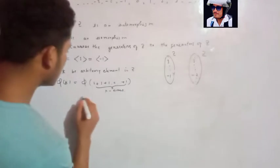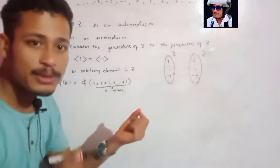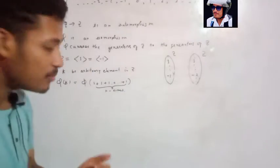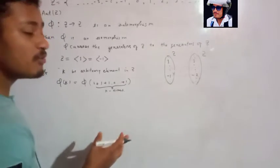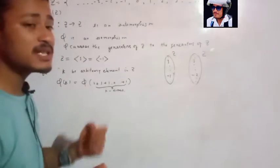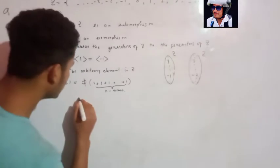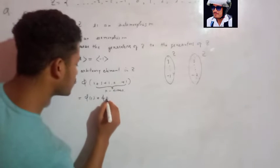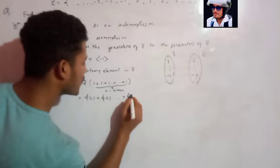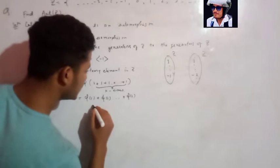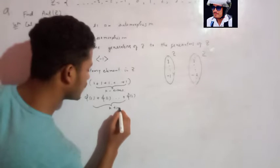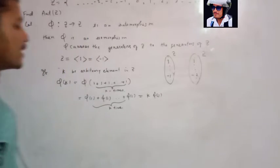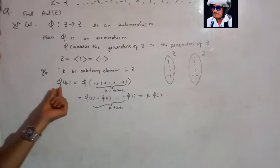Since pi is a homomorphism, pi of (a + b) equals pi of a plus pi of b. Applying this, pi of k becomes pi of 1 + pi of 1 + ... + pi of 1, k times. So this equals k times pi of 1, meaning pi of k = k · pi(1).